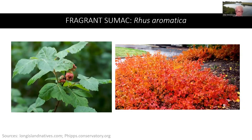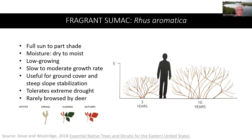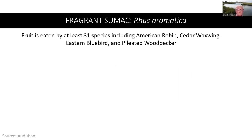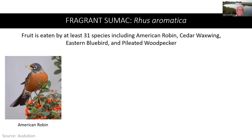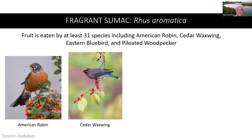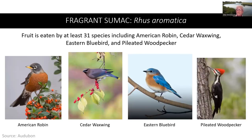Fragrant sumac is a low colony-forming shrub with glossy dark green aromatic summer foliage and excellent autumn color. It has a slow to moderate growth rate and is useful for ground cover and steep slope stabilization. It is tolerant of extreme drought and is rarely browsed by deer. The fruit of the fragrant sumac is eaten by at least 31 species, including the American robin, cedar waxwing, eastern bluebird, and pileated woodpecker.